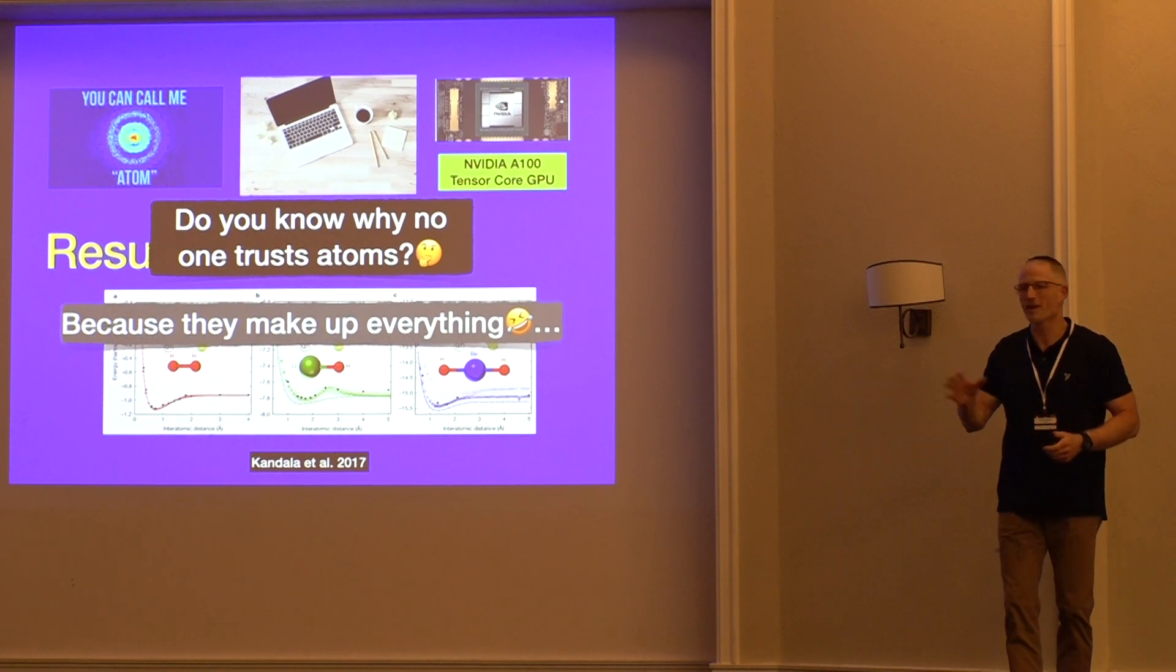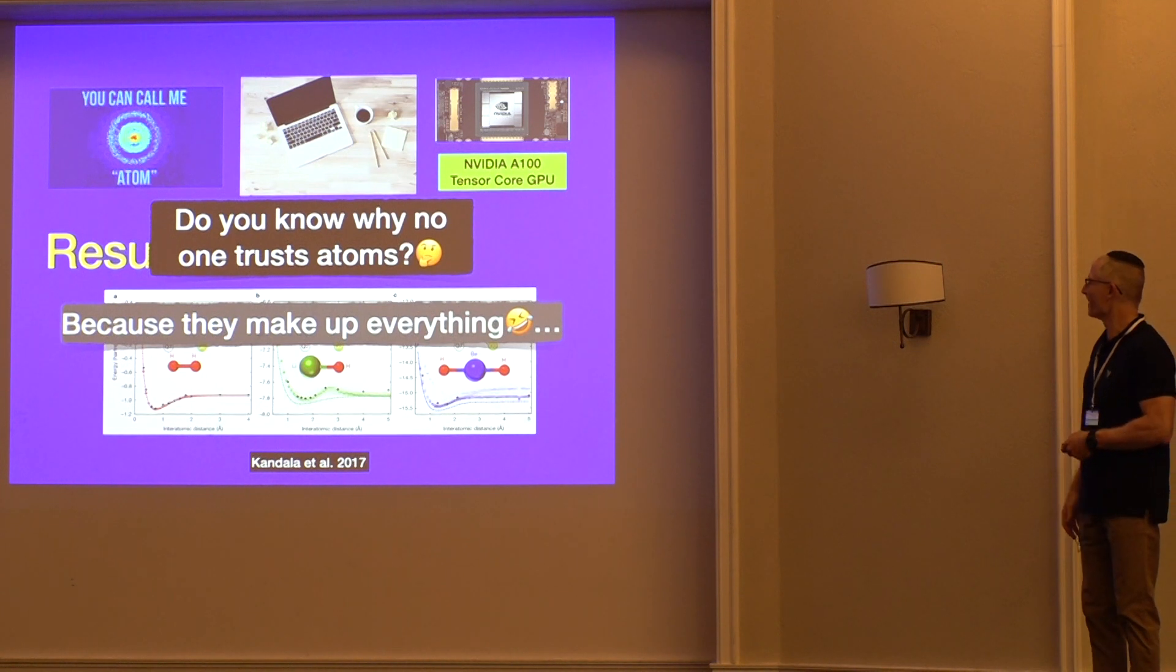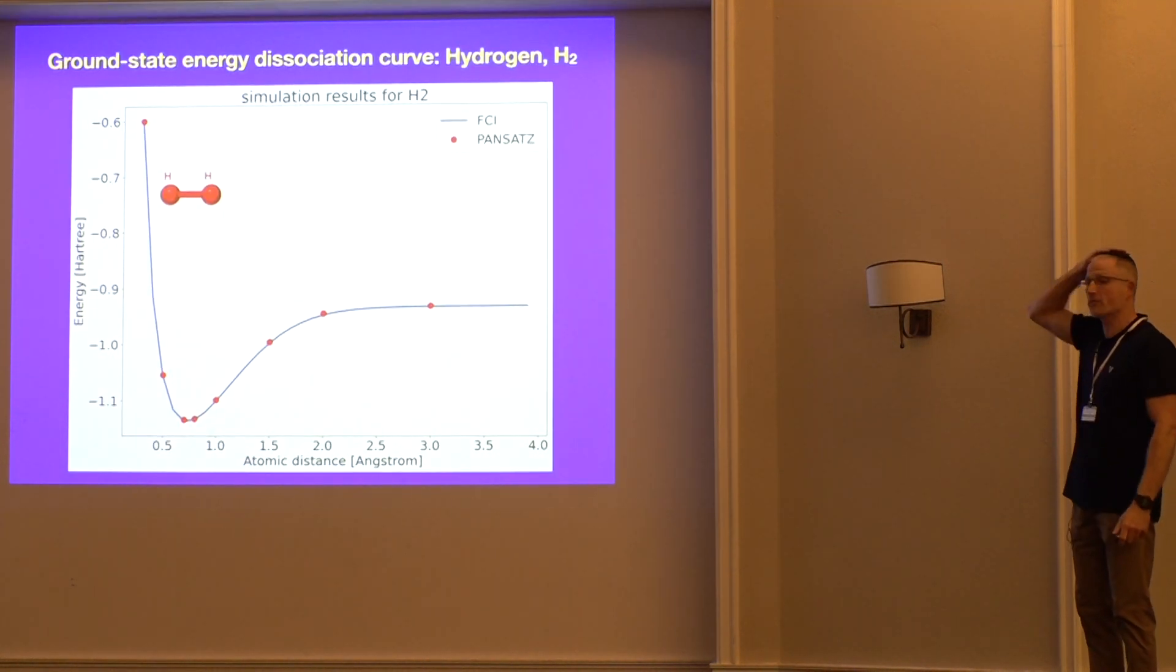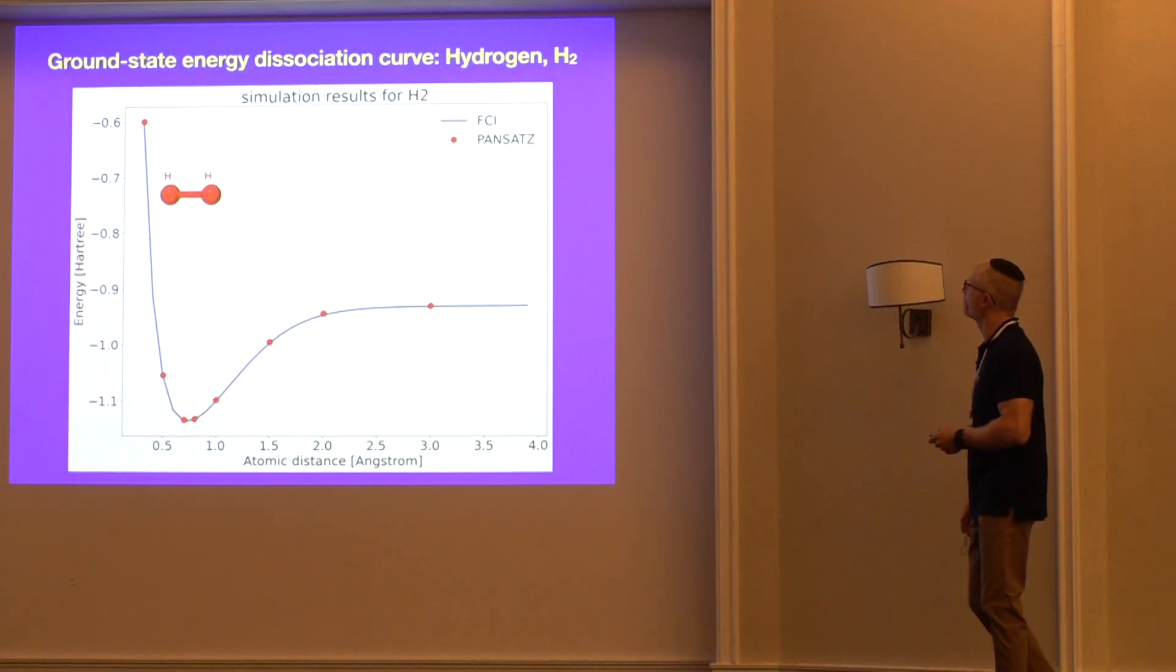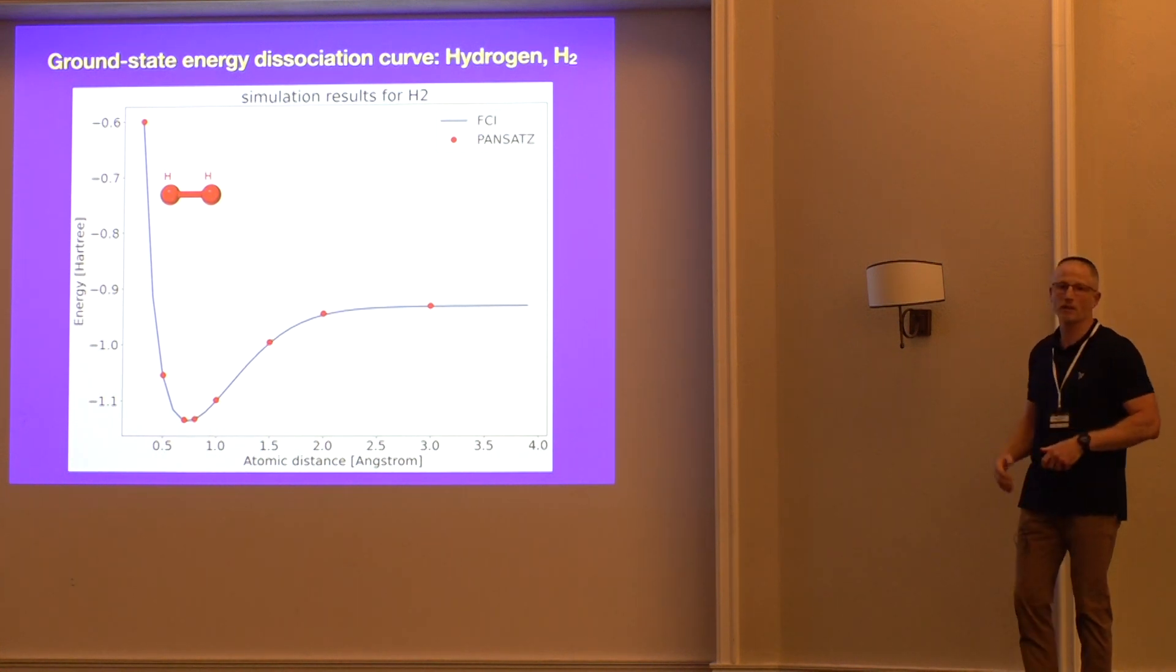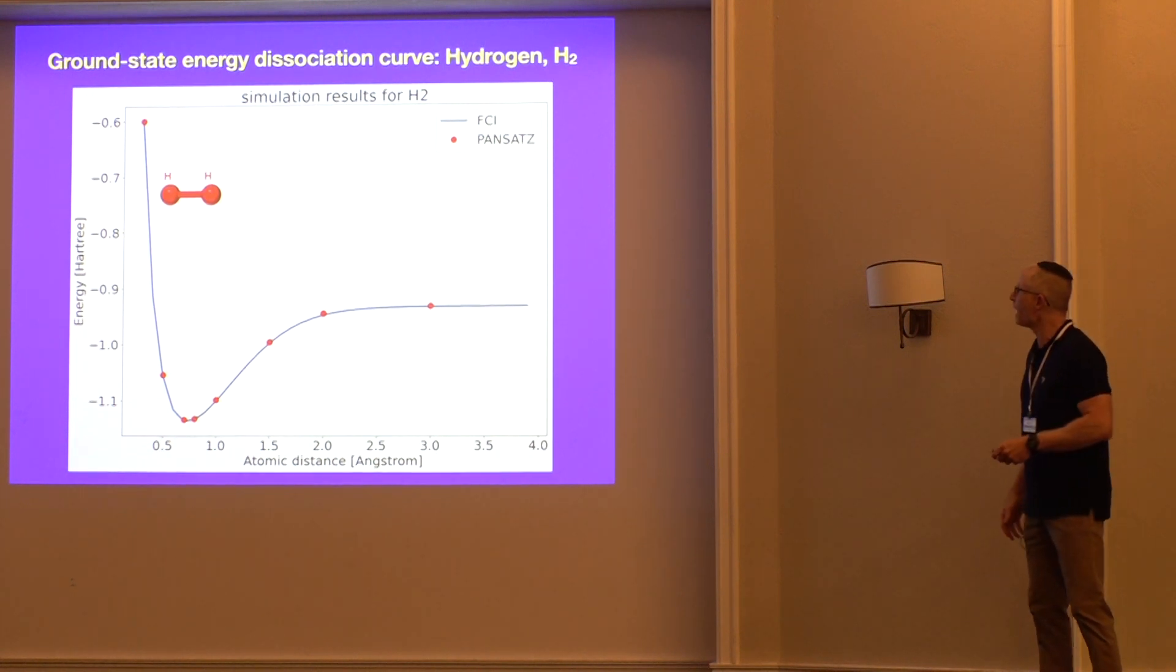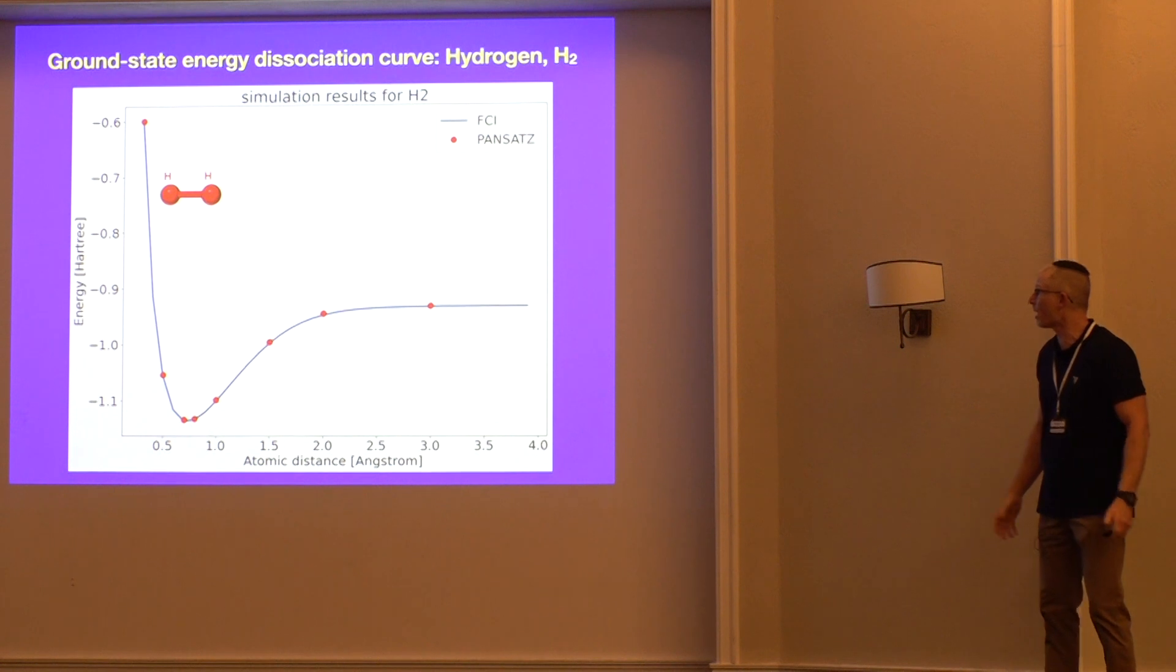That would be better with an American audience, I'm guessing. All right. Here's our first result from simulation. This is the ground state energy for the hydrogen molecule. We've got energy in Hartree versus atomic distance in Angstrom. The blue curve corresponds to the FCI, that's the full configuration interaction, the exact solution. And the red dots are the pansatz results. And they're spot on with the FCI, so that's good.